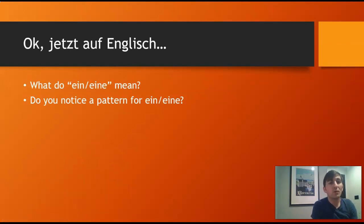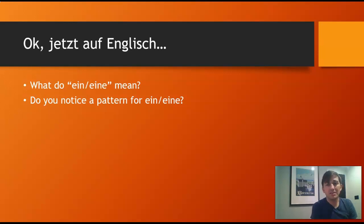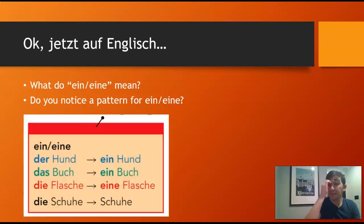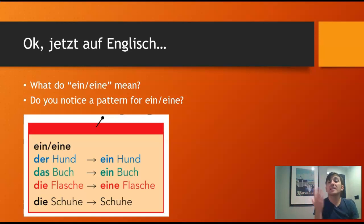So, first of all, what does the word ein in the sentence — ein oder eine — mean? Ein oder eine means 'a'. Now, did you notice a pattern of when we used ein oder eine? For example, we had words like der Hund — ein Hund. Die Katze — eine Katze. Das Auto — ein Auto. Words that are masculine, when they're the subject of a sentence, if you want to say 'a' instead of 'the', you'll use ein. The same goes for das — like das Buch, the book, you would use ein Buch, a book.